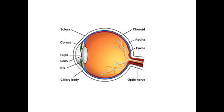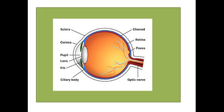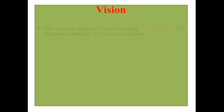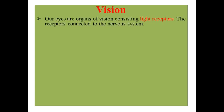Hello, today we are going to see the human eye. We will focus on the main parts of the human eye. Our eye is concerned with vision — our eyes are organs of vision consisting of light receptors. These receptors are responsible for connecting our eye with our nervous system.